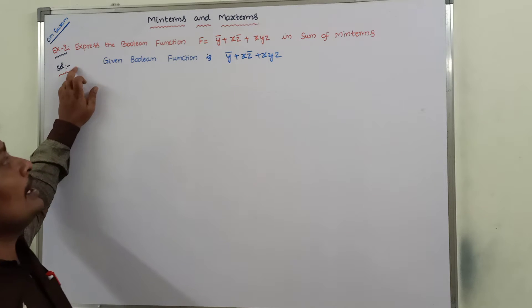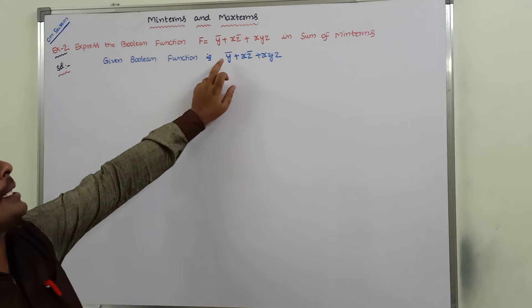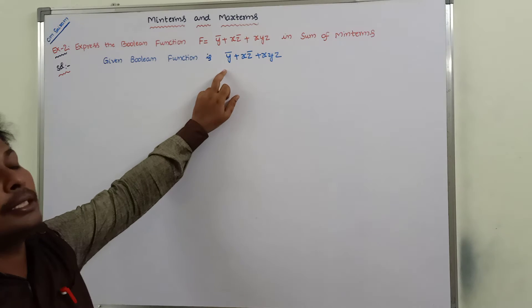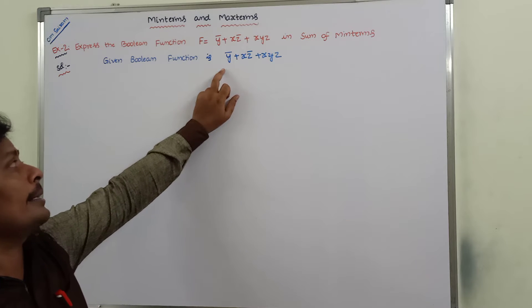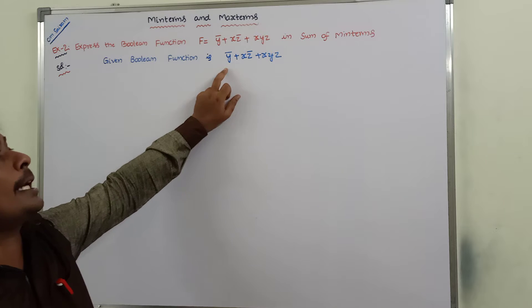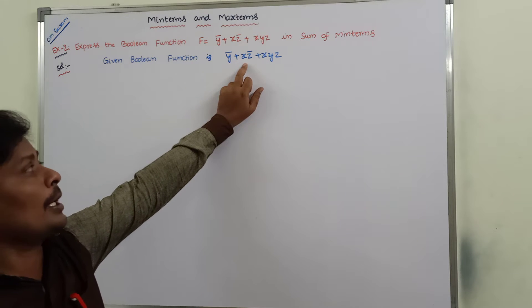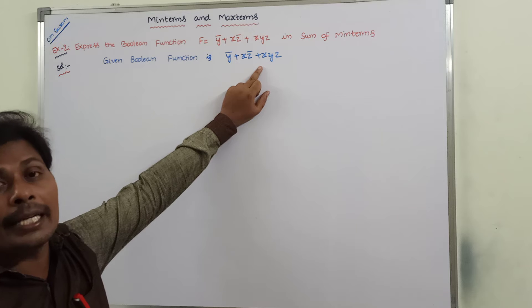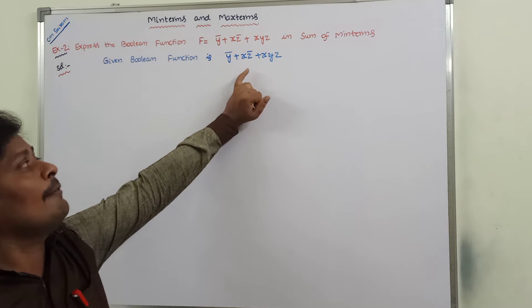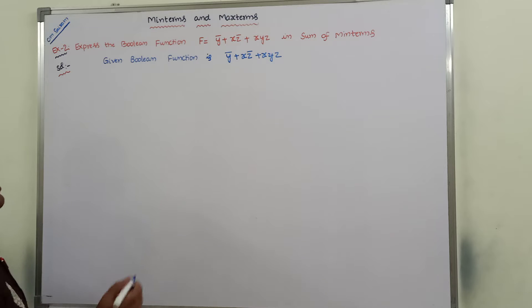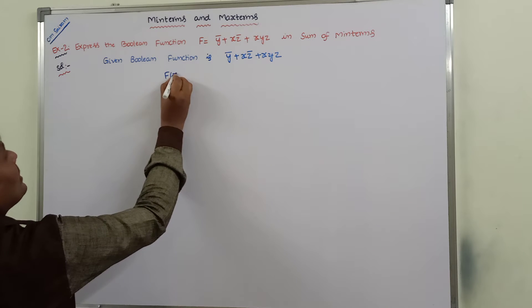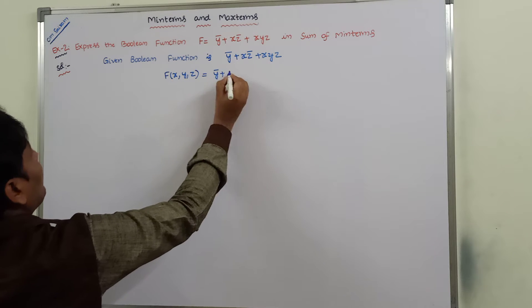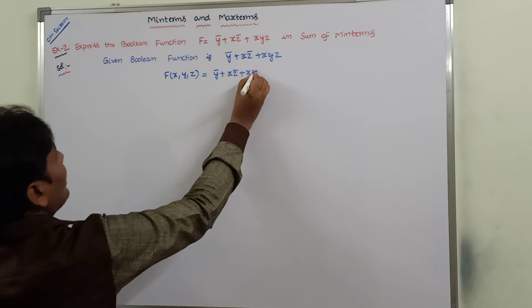The given Boolean function f is ȳ + xz̄ + xyz. In the given Boolean function, there are three product terms: ȳ is the first product term, xz̄ is the second product term, and xyz is the third product term. There are three variables — x, y, z — so the function can be written as f(x, y, z) = ȳ + xz̄ + xyz.